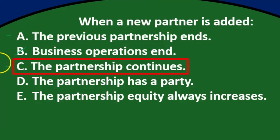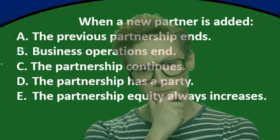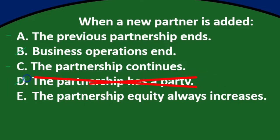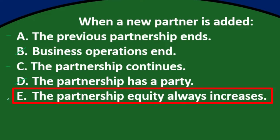Since A and C seem to contradict each other, one of those is likely the correct answer. D says the partnership has a party — they may well do, but it's not a legal requirement. E says the partnership equity always increases, and when a new partner is added it's not necessarily the case that equity will always increase.